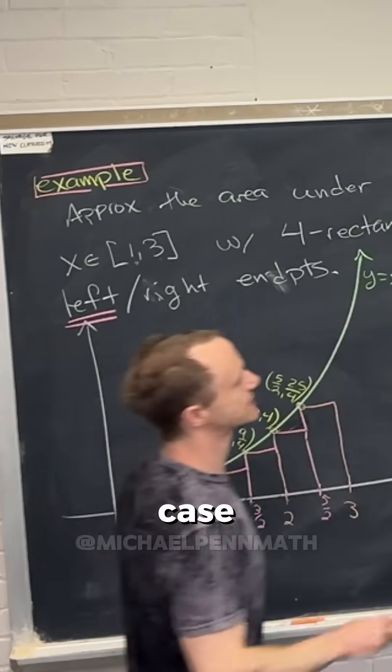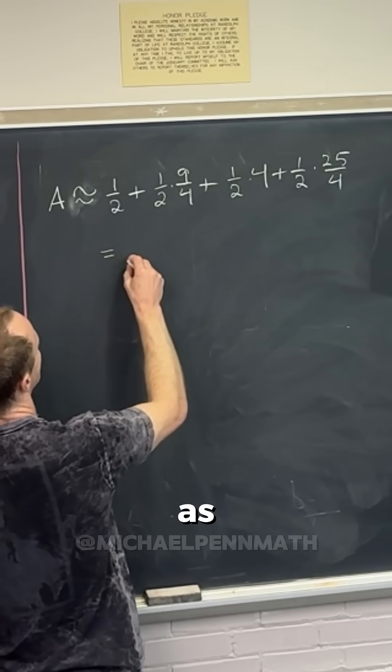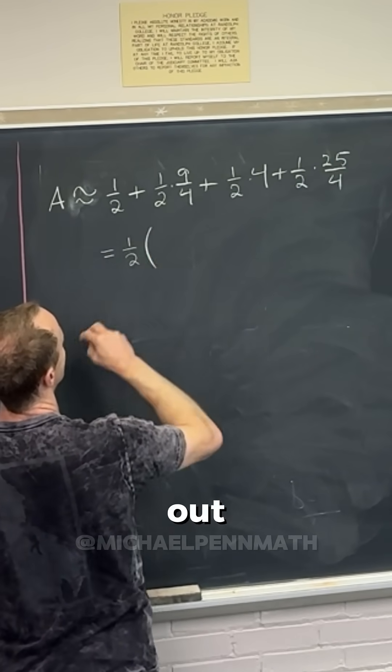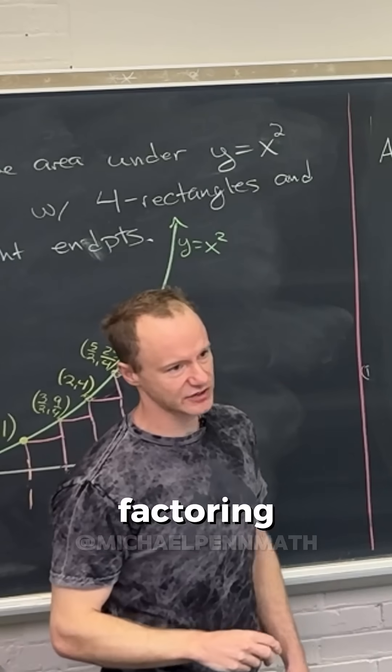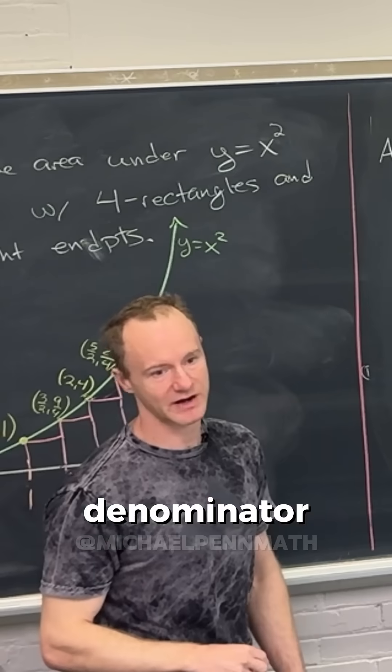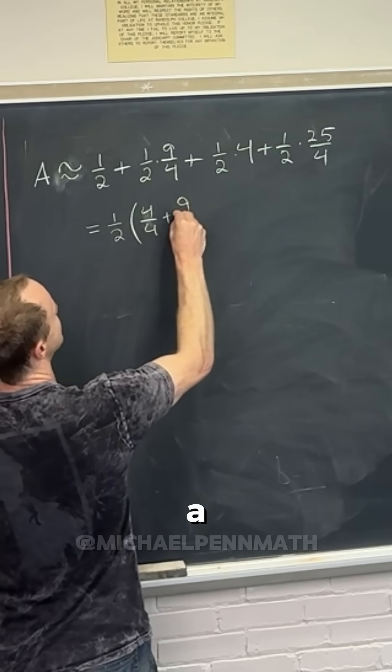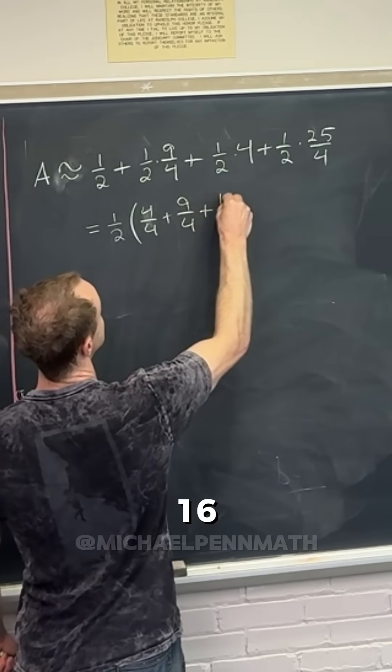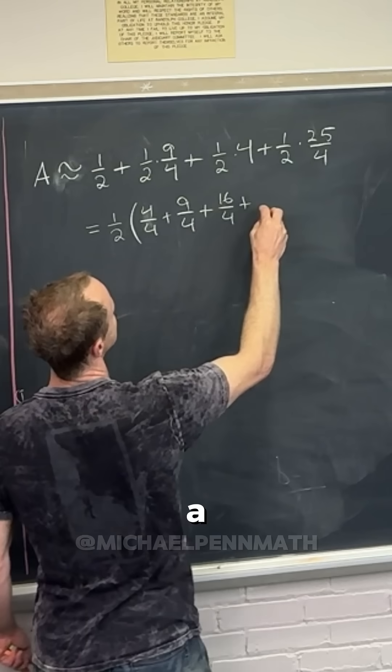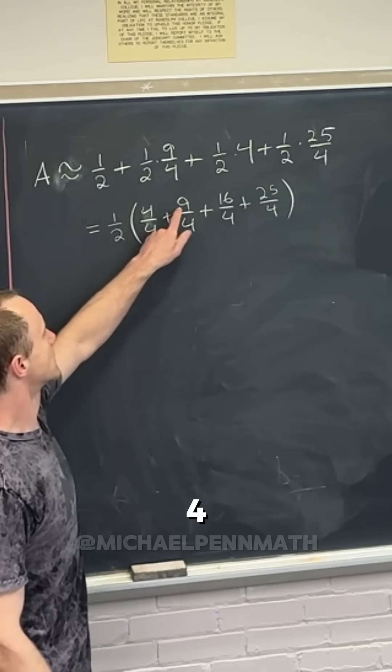The base is always a half, right, in this case. So let's see, perhaps we would write this as, maybe we would factor a half out. And then we'd have, let's see, after factoring a half out, we have a denominator of four, so perhaps we would find a common denominator for everything. So this would be four over four plus nine over four plus 16 over four plus 25 over four.